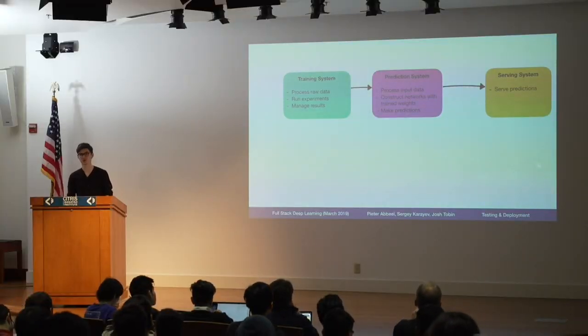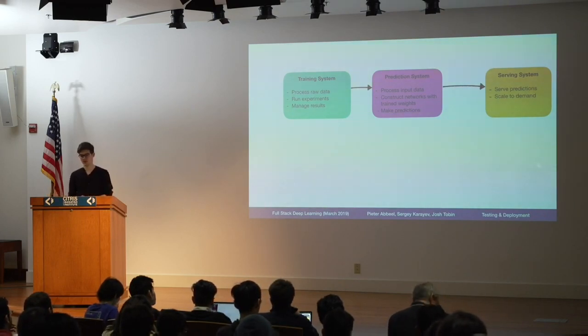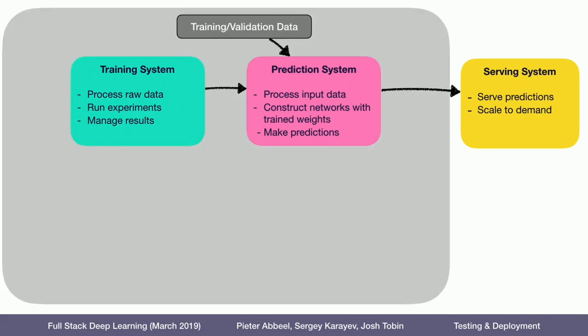The goal of the serving system is to serve predictions. Ideally it scales to demand if it's a web endpoint — sometimes you have one user, sometimes a thousand, sometimes hundreds of thousands of requests per minute. Alternatively, if you're deploying to a phone, it satisfies the constraints of the system: yes, we trained a prediction system, but can we actually serve predictions on the end user device?